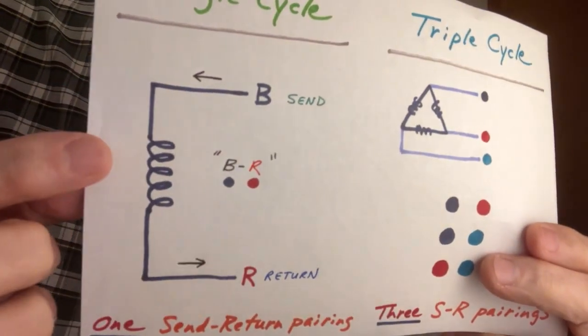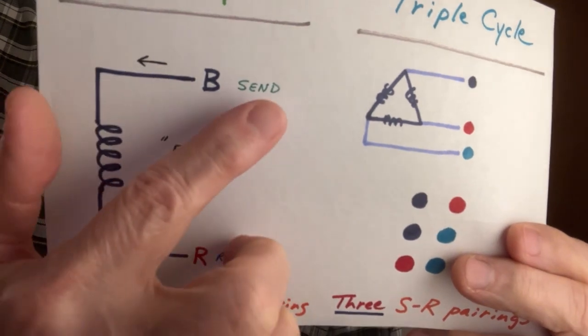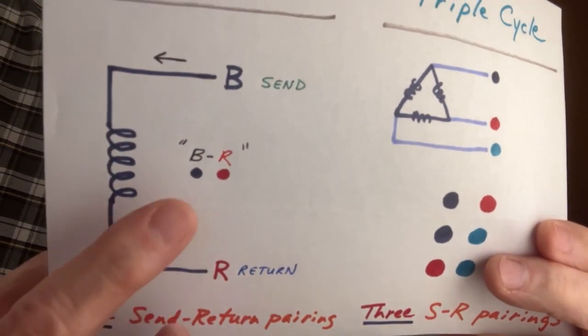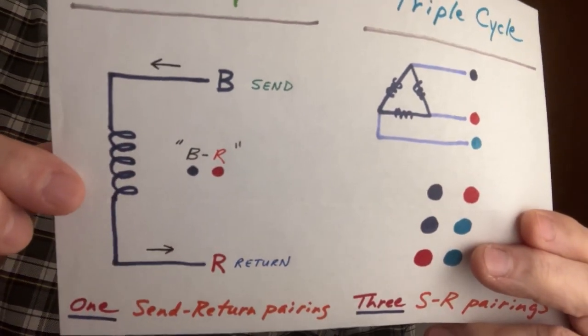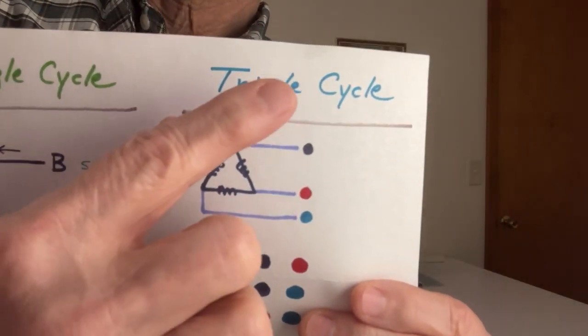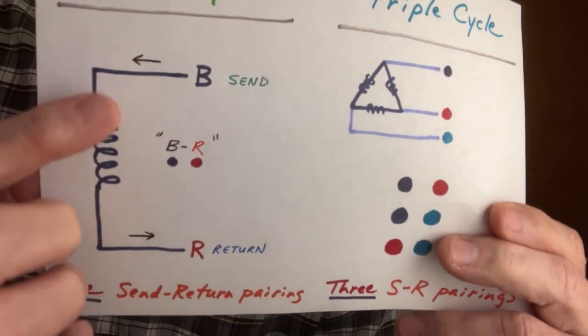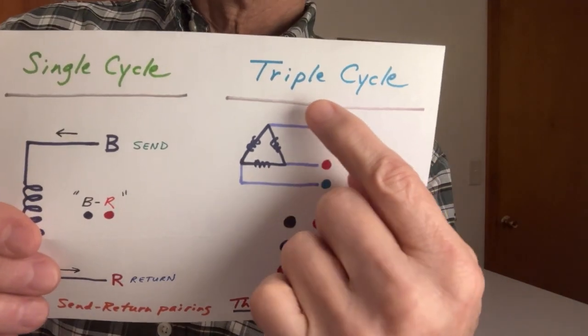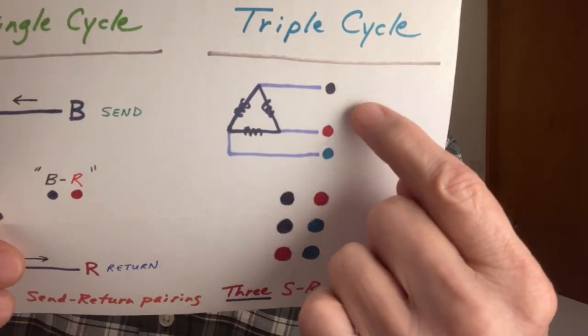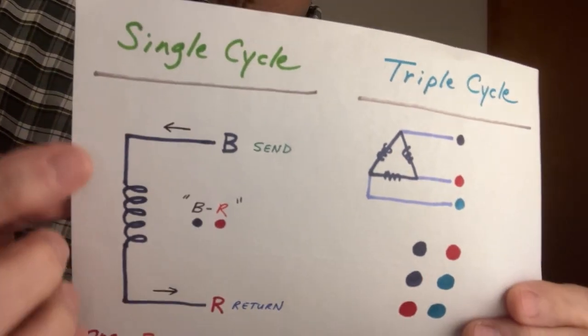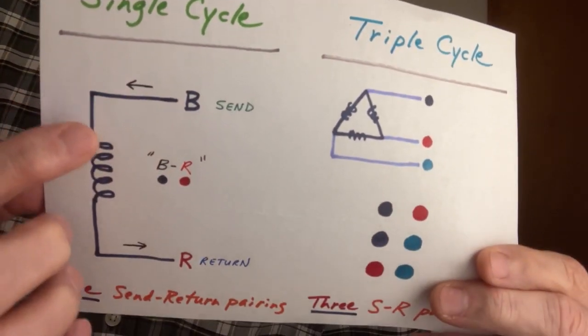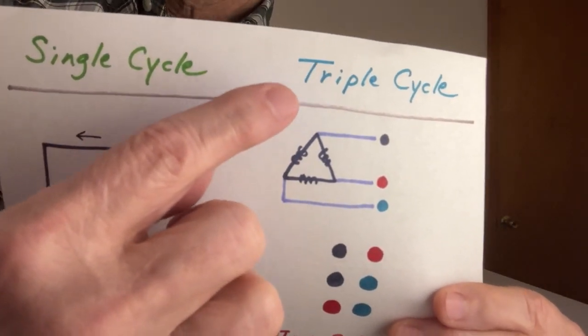Using that send-return idea, you can more easily understand electrical service with three cycles instead of one. Now let's say you have single cycle - we talked about that and showed a transformer. If your black is your send, then your red would be your return. You have one send-return pairing here. This is how you can better understand single cycle as opposed to triple cycle. Because ordinarily you say, oh this is called single phase and you have two conductors here, and then somebody tells you this is three phase, and you see only three conductors.